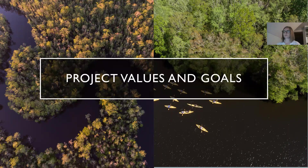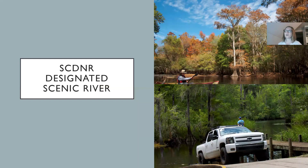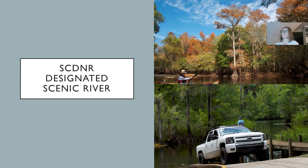Now I'll go over the project values and goals. First, we want to protect the scenic values and wilderness quality of this section of the river. This became especially important when South Carolina DNR designated a section as part of the scenic river corridor. Our entire project area is not part of the scenic corridor — it runs from downtown Kingstree to Rocky Point Community Forest, but only the section from downtown Kingstree to just below Andrews is designated scenic.